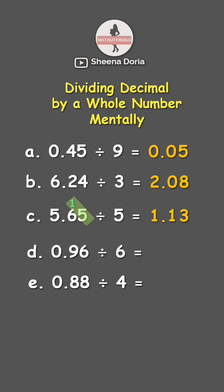Next, we have 0.96 divided by 6. That's 0 divided by 6, which is 0. Put the decimal point. Next, we have 9 divided by 6, which is 1 with a remainder of 3. Let's put the remainder here.